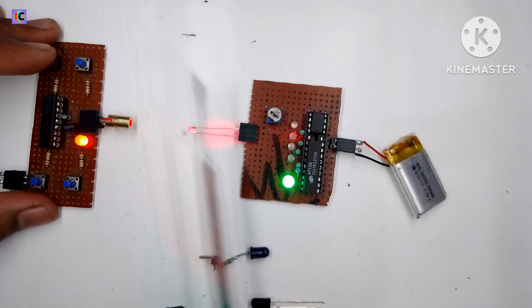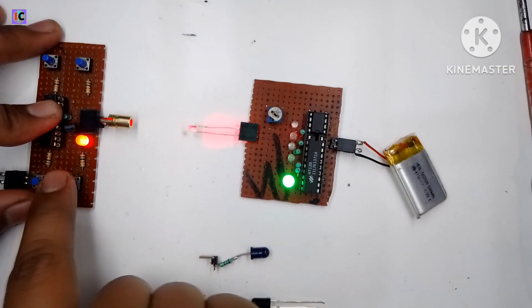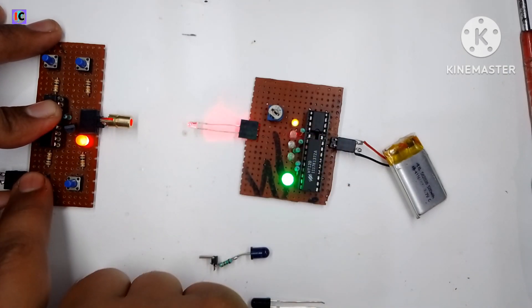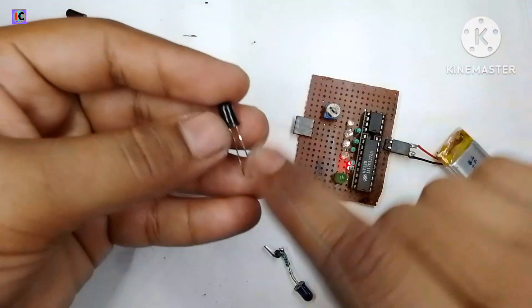As you can see when I block the laser from the receiver the green LED will turn off and it's working.